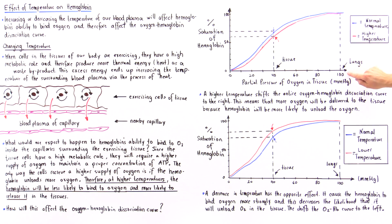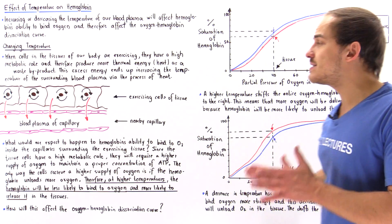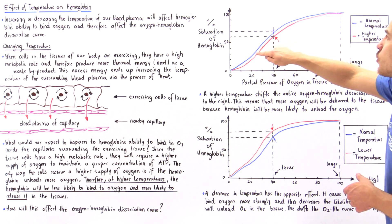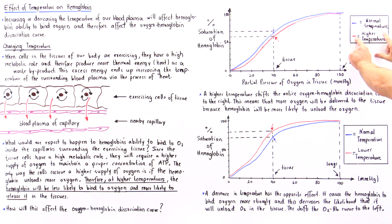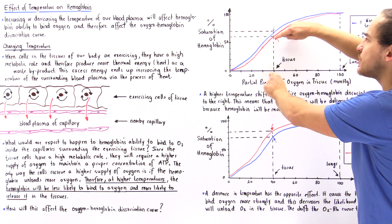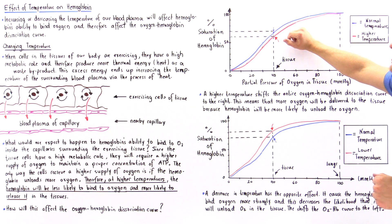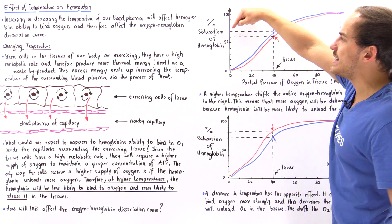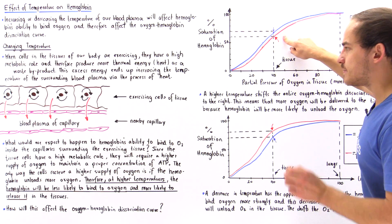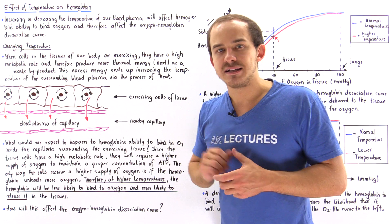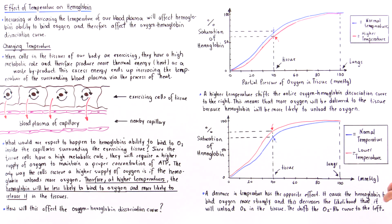That's exactly what happens when we increase the temperature of our blood plasma — we shift the entire curve to the right. At 100 mmHg, that is the partial pressure within the alveoli of the lungs. At 40 mmHg, this is the partial pressure within our tissue. Notice what the red curve tells us: at a higher temperature, looking at the y-axis value, we get approximately 60% saturation. The blue curve gives approximately 70%. So the red curve describes hemoglobin that is less likely to bind to oxygen and more likely to unload and release it to the exercising tissue.